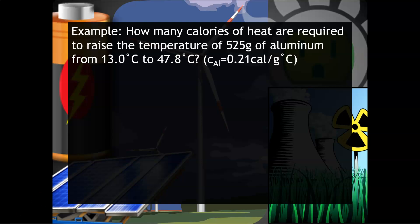A really helpful strategy is listing out all the variables that you are looking for. So we have Q, M, C, and delta T. The question is asking how many calories of heat, so that's what we're looking for. The mass of aluminum is 525 grams. The specific heat is given in parentheses. And then the delta T again is T final minus T initial.